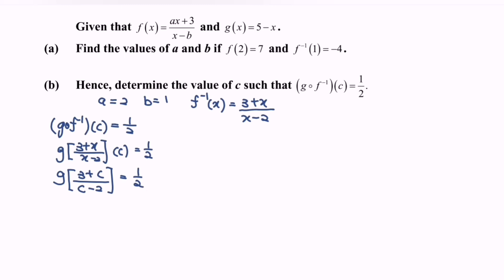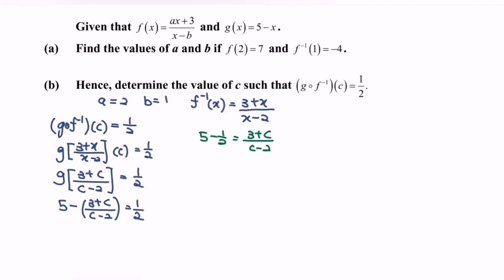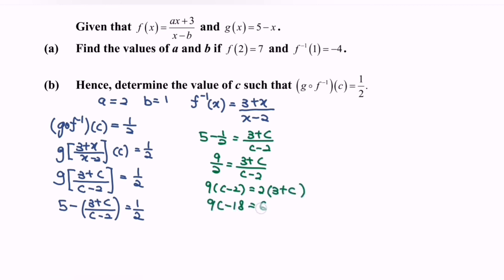Substitute into g(x) = 5 - x: 5 - (3 + c) / (c - 2) = (3 + c) / (c - 2). Wait — this simplifies to 9/2 = (3 + c) / (c - 2). Cross multiply: 9(c - 2) = 2(3 + c), so 9c - 18 = 6 + 2c.